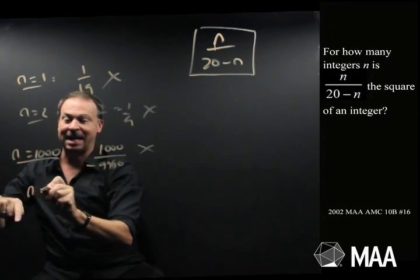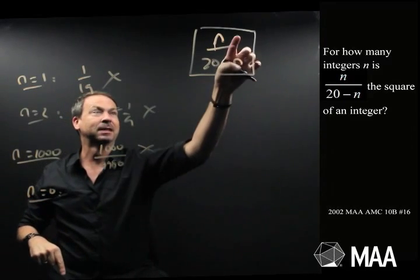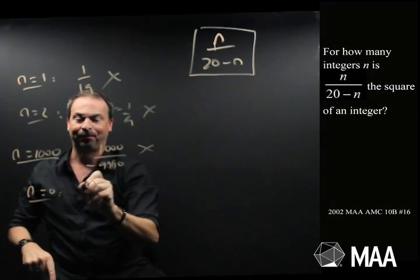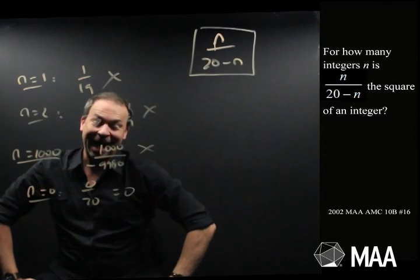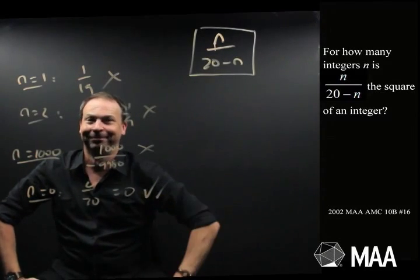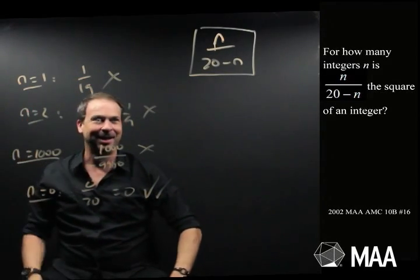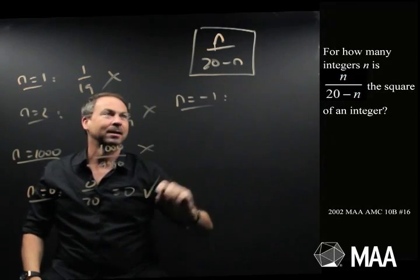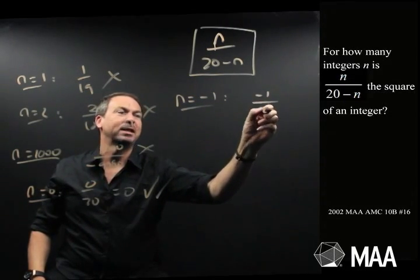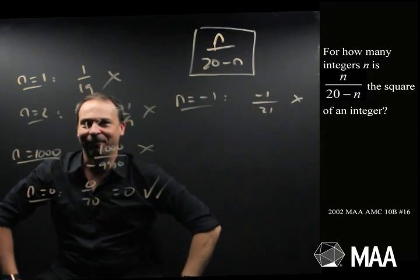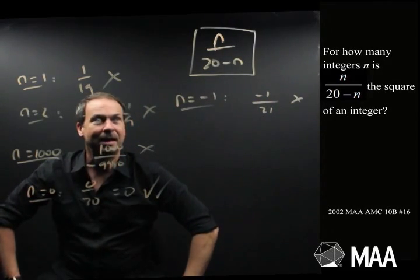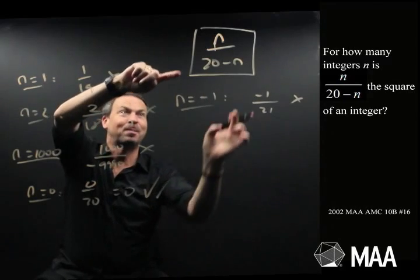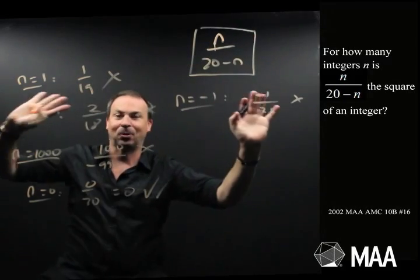For example, way down low, like n equals 0. Put in 0, I get 0 over 20, which is 0, which actually technically is a square number. So there's 1 that works. What about n equals negative 1? Then I get negative 1 over 21. No, it's a fraction, and it's negative. Double problems. In fact, I can see now any negative integer would be negative over positive is not going to work.